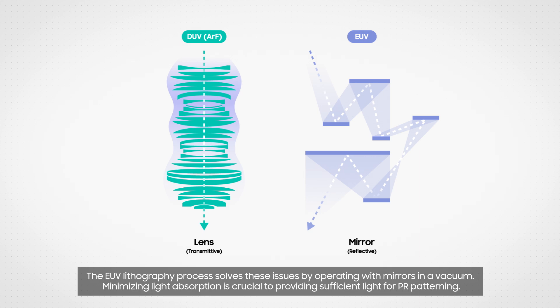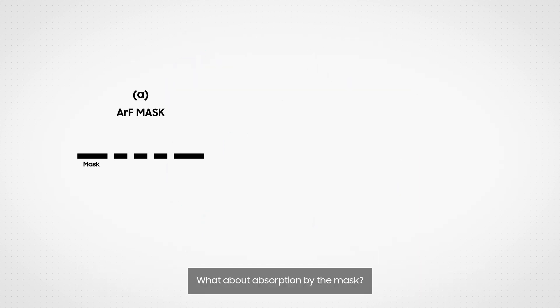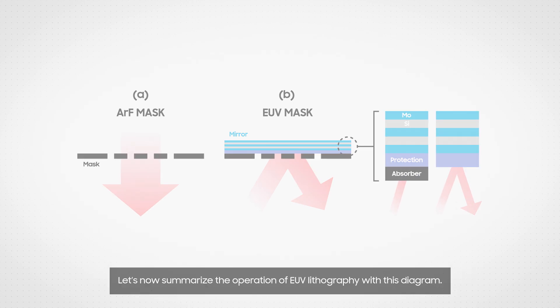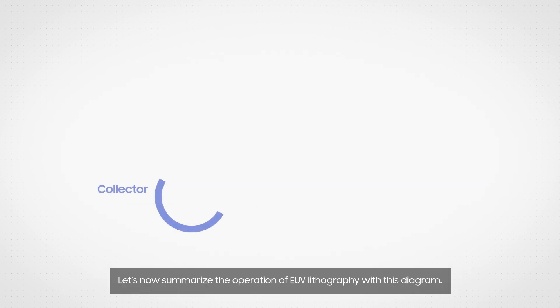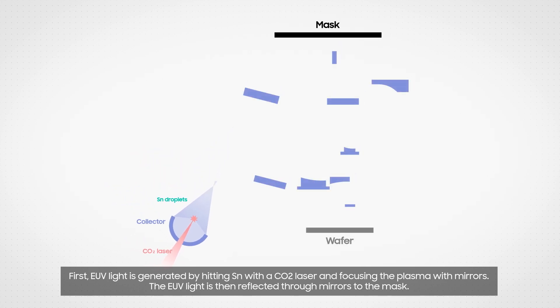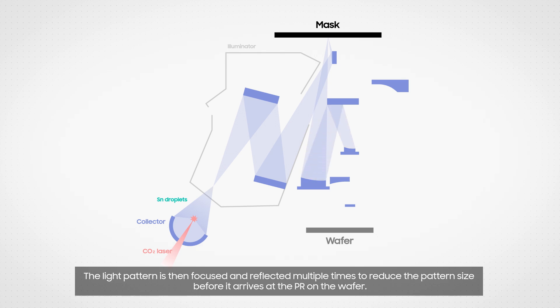Minimizing light absorption is crucial to providing sufficient light for PR patterning. What about absorption by the mask? Unlike a conventional mask with areas that either transmit or block light, the mask for the EUV process is made up of areas that either reflect or absorb light. Let's now summarize the operation of EUV lithography with this diagram. First, EUV light is generated by hitting tin with a CO2 laser and focusing the plasma with mirrors. The EUV light is then reflected through mirrors to the mask. The light pattern is then focused and reflected multiple times to reduce the pattern size before it arrives at the PR on the wafer.